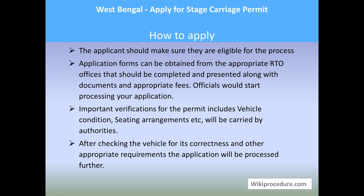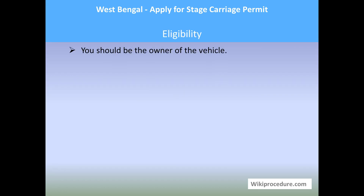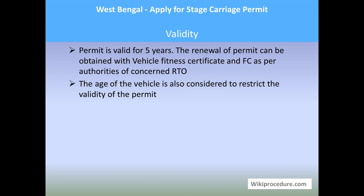Eligibility: you should be the owner of the vehicle in order to apply for this permit. Validity: the permit is valid for five years. Renewal of the permit can be obtained with the vehicle fitness certificate (FC) as per the concerned RTO authorities. FC is clearance for the vehicle regarding its condition and prerequisite infrastructure. The age of the vehicle is also considered when determining the validity of the permit.